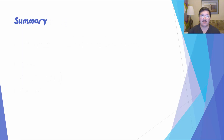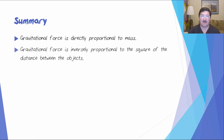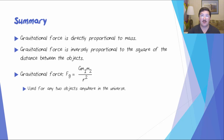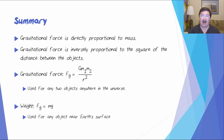Let's summarize this lesson. Gravitational force is directly proportional to the masses of the objects and inversely proportional to the square of the distance between them. The equation for gravitational force is Fg equals G M1 M2 over R squared, used for any two objects anywhere in the universe. The equation for the weight of an object is Fg equals mg, used for any object near Earth's surface.